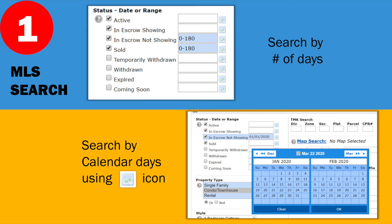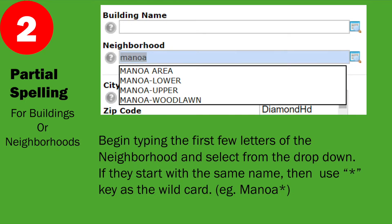Number two: neighborhoods. When you type in the first few letters of the neighborhood, the drop-down should appear. If not, you may have to give it a little time. As you're typing the neighborhoods, you'll notice if you have multiple neighborhoods — like Manoa in this case — you can use an asterisk after Manoa. What that does is it tells the system to select all of the Manoas, anything starting with Manoa, because the asterisk key is the wildcard.